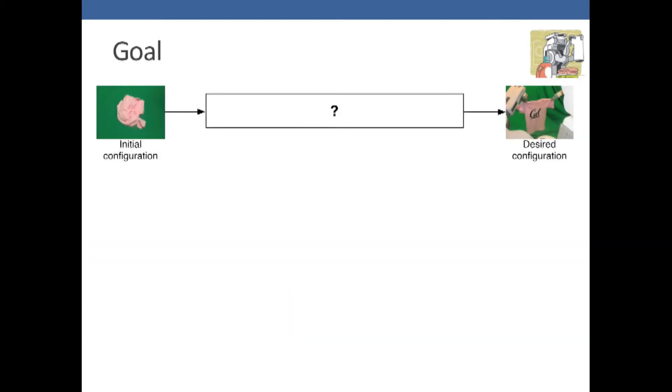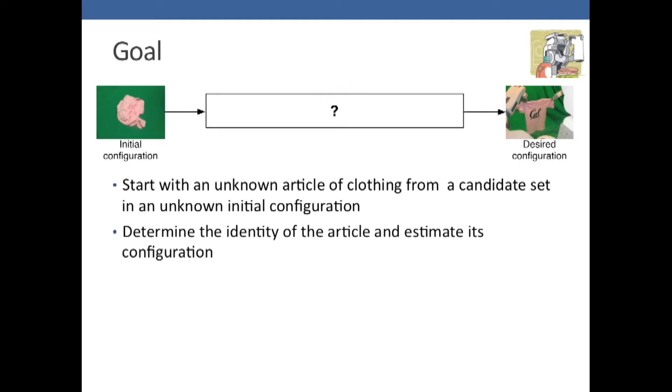The goal is to start with an unknown article of clothing from a candidate set in an unknown initial configuration. We want to determine the identity of the article and estimate its configuration, and then bring the article into some desired configuration.